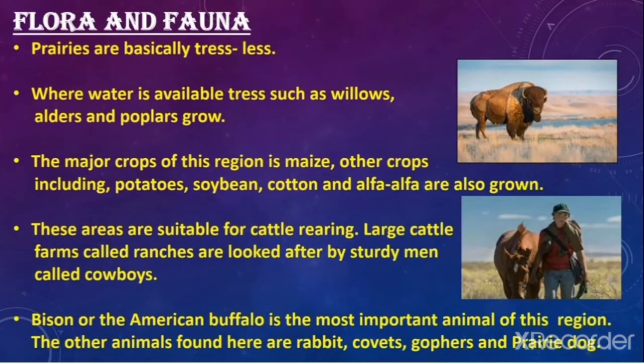Flora and fauna of prairies: prairies are basically treeless. Where water is available, trees such as willows, alders, and poplars grow. The major crop of this region is maize. Other crops including potatoes, soya bean, cotton, and alfalfa are also grown.